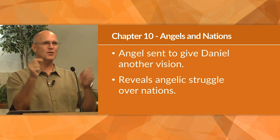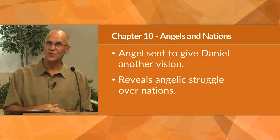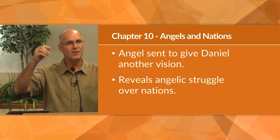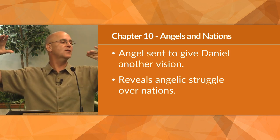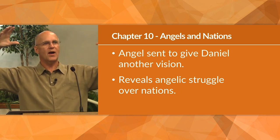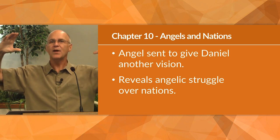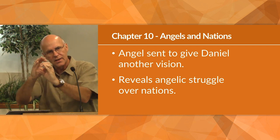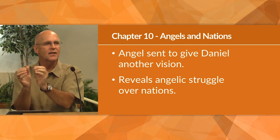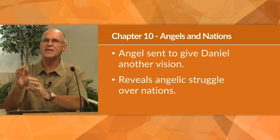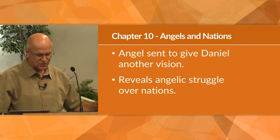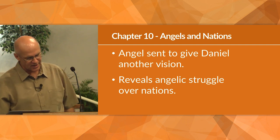The revelation in chapter 10 shows Daniel that the order of world events is controlled by God and worked out by His messengers — a fascinating thing, especially when you think about what's going on in our world today. In chapter 11, after the big panoramic picture of four great world empires over four or five hundred years, he now telescopes in to events that take place in between these kingdoms.